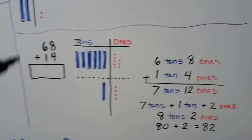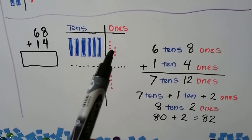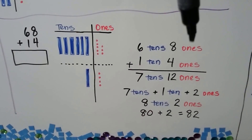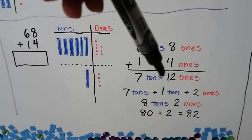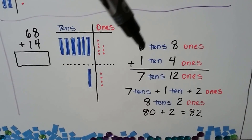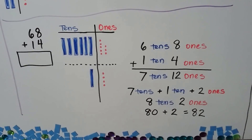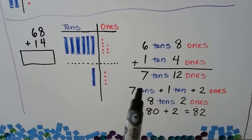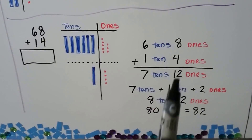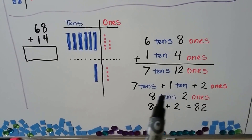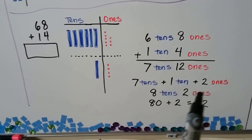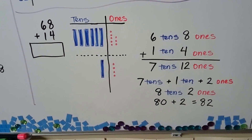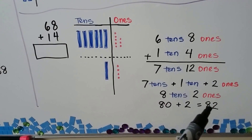Let's try one last one. We have 68 plus 14. We have six tens and eight ones, and we're adding one ten and four ones. We add all the ones: eight plus four are 12. We have 12 ones. Six tens plus one ten makes seven tens. In the 12 ones, there's one ten and two ones. So we have seven tens plus one more ten from the 12, making eight tens. We have eight tens and two ones. That's 80 plus two more, equal to 82. So 68 plus 14 is equal to 82.